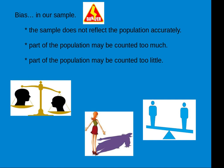Next, we should talk about bias in the sample. A biased sample means it does not show the population characteristics accurately — part of the population may be counted too much, or part of the population may be counted too little. So the population characteristics might be overrepresented or underrepresented in the sample. All of these are kinds of bias, which is bad, and we don't want bias.